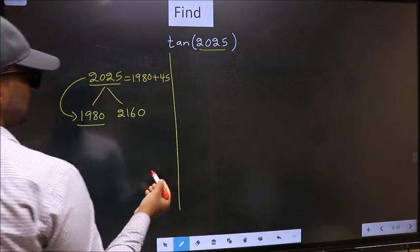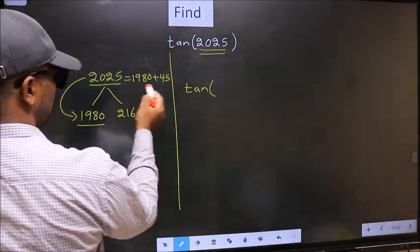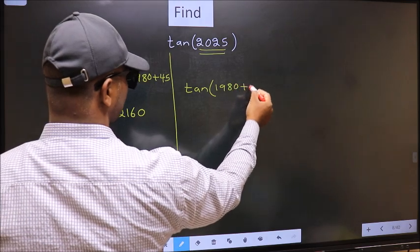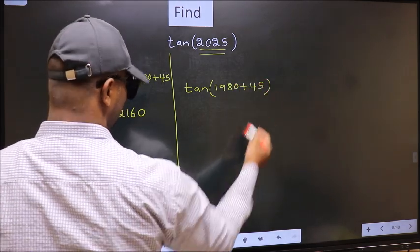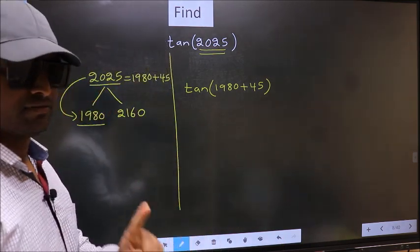So this will become tan(1980 + 45). This is your step 1.